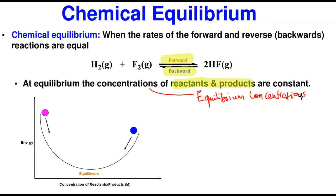When we achieve equilibrium, the concentration of the product at that point in time will never change. Remember, they are not equal to each other — what they are is constant; they don't change. They are constant.